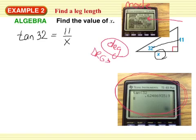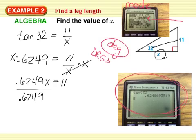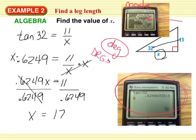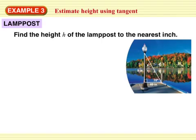So the tangent of 32 degrees gives us 0.6249, and we set that equal to 11 over X. Multiply both sides by X: 0.6249X equals 11. Dividing, X equals approximately 17.6. When doing the math, I usually keep the full value in the calculator and don't round it before dividing — so I would do 11 divided by my calculator answer.